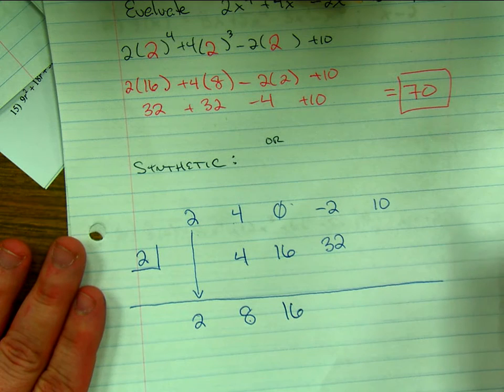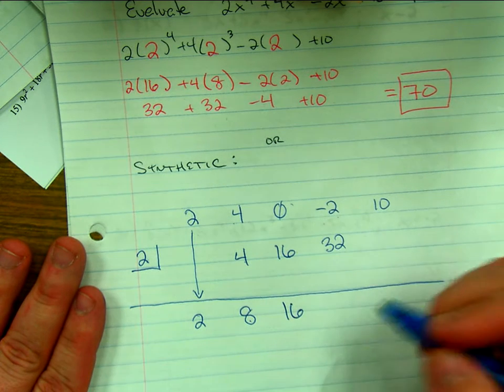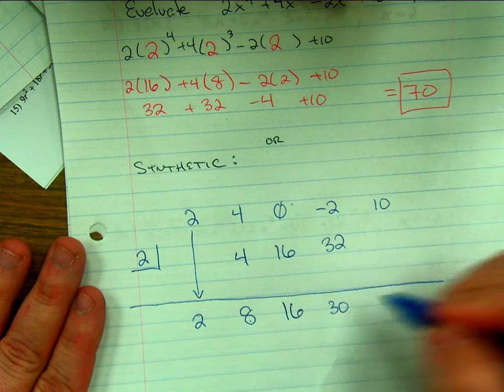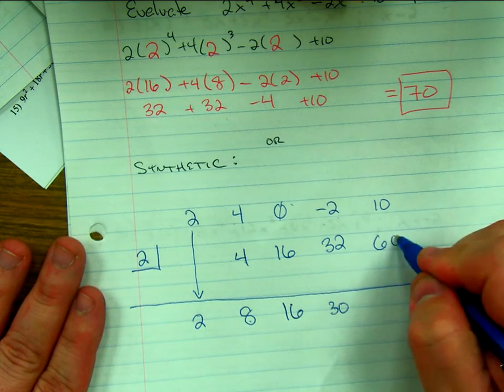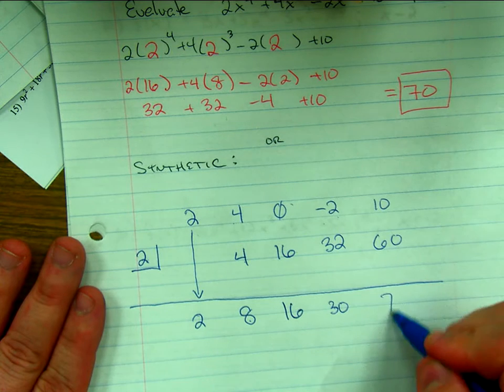Now I'm gonna multiply 2 times 16, 32. Now I'm gonna add negative 2 plus 32, 30. Now I'm gonna multiply 2 times 30, 60. Finally I'm gonna add one last time, what?